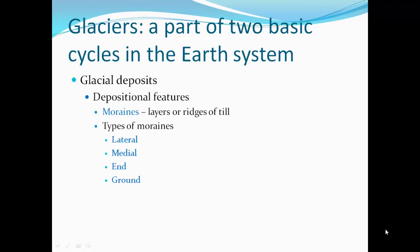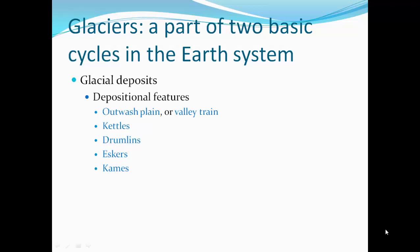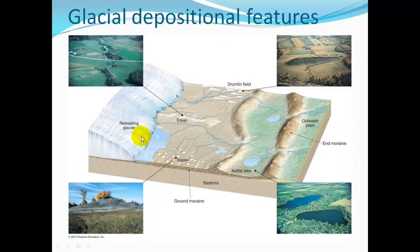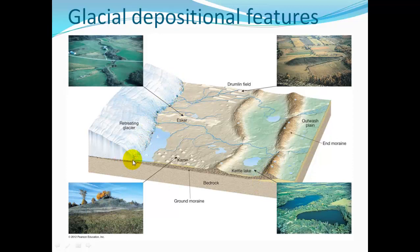Other deposits form actual features. Moraines are layers or ridges of till, and the types include lateral, medial, end, and ground moraines. Other positional features include outwash plains or valley trains, kettles, drumlins, eskers, and kames. Here in this diagram, a glacier is retreating — losing ice faster than it's gaining ice. This is a ground moraine — sediments deposited by the ice. The edge of the glacier used to be here, and at another time it was further out. This end moraine is till deposited at the end of the glacier. As it recedes, it's depositing rock forming another end moraine — that's how you tell the history about the length of that glacier.